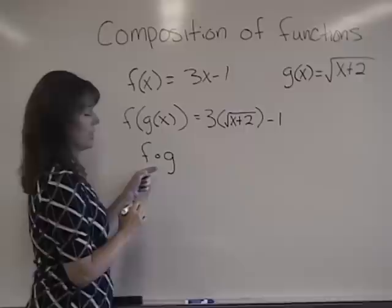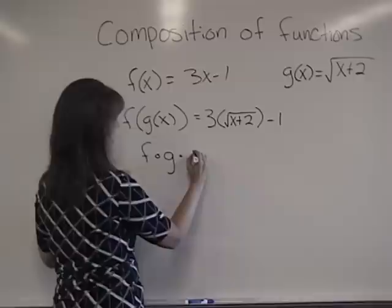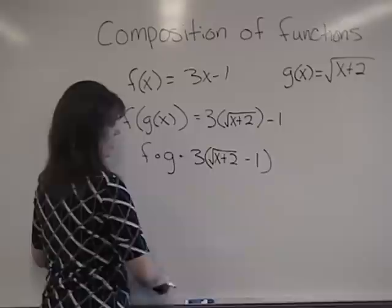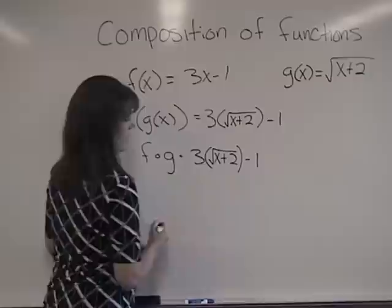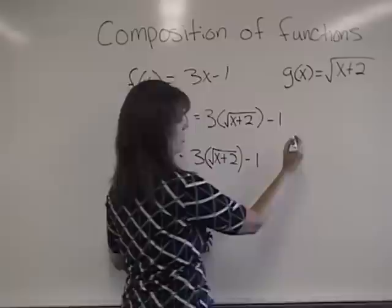Another way people write this is, we call it fog, or we compose f of x with g of x. And that is the exact same answer. 3 times the square root of x plus 2 minus 1. Let's move that parentheses in the right place.